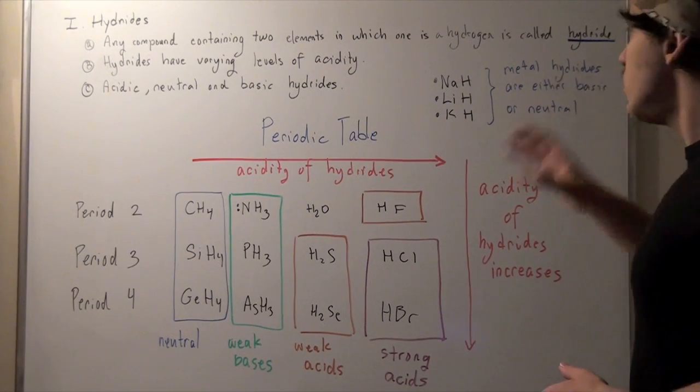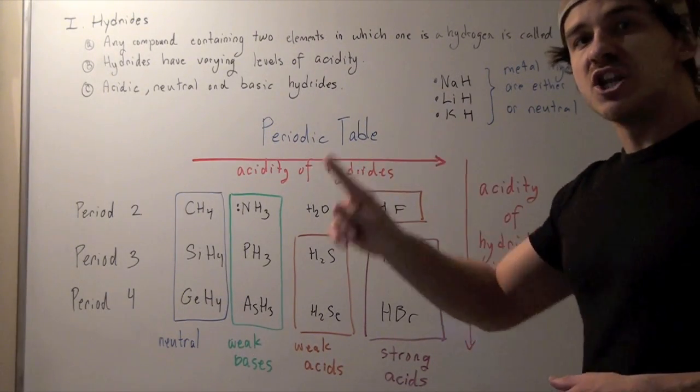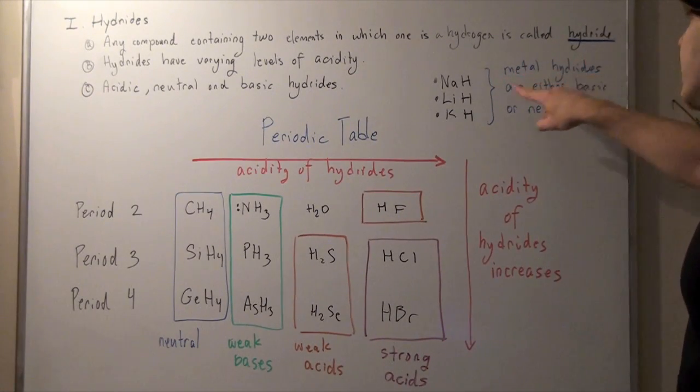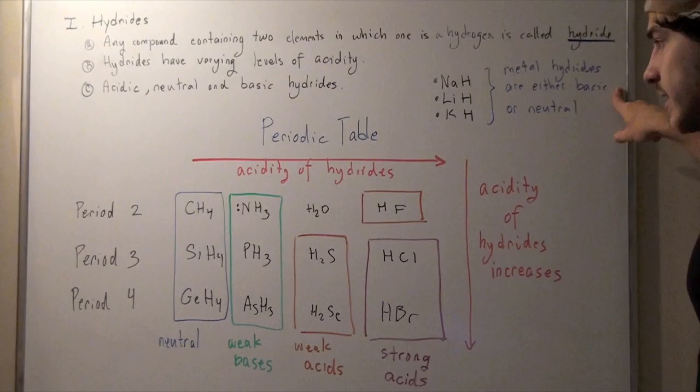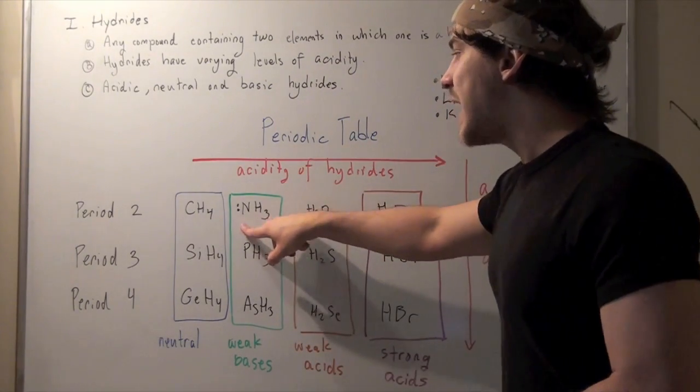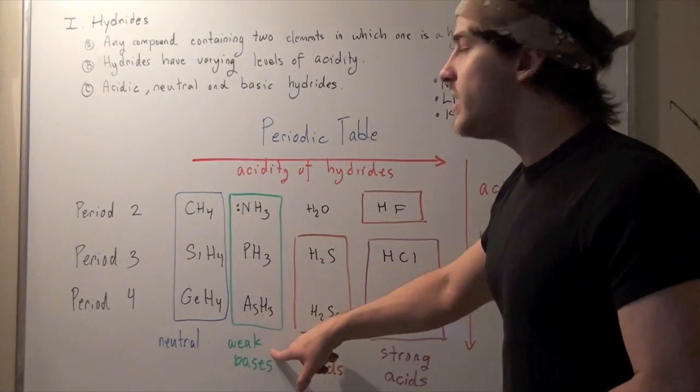With the exception of one molecule, all nonmetal hydrides are either neutral or acidic. The exception is ammonia. Ammonia is the only nonmetal hydride that forms a weak base.